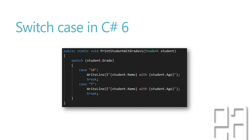The switch case in C# 6.0 basically accepts literal types — integers, strings, and non-null values. Even if there is a Student object with different kinds of properties like grade, name, and age, and you want to verify the student's grade, you cannot pass the student object itself into the switch. If you want to verify a student as a whole with different property combinations, you cannot do that. That was the limitation of C# 6.0, where you had to use if statements with many conditions instead.